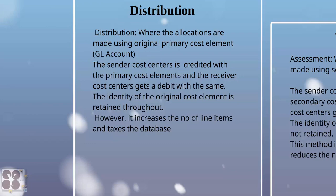We will see an example of how it works. However, in this method, the number of line items is much more — it increases our database. Each time we allocate, we have to refer back to the original cost center. Each time one has to be debited, another has to be credited, so the original cost element has to be there each time.